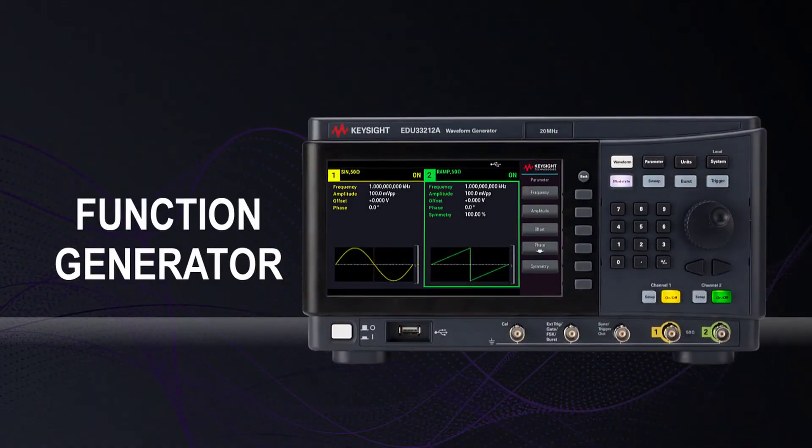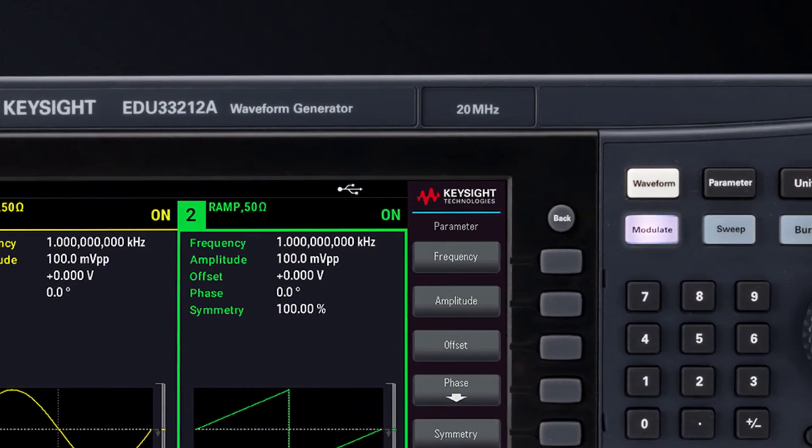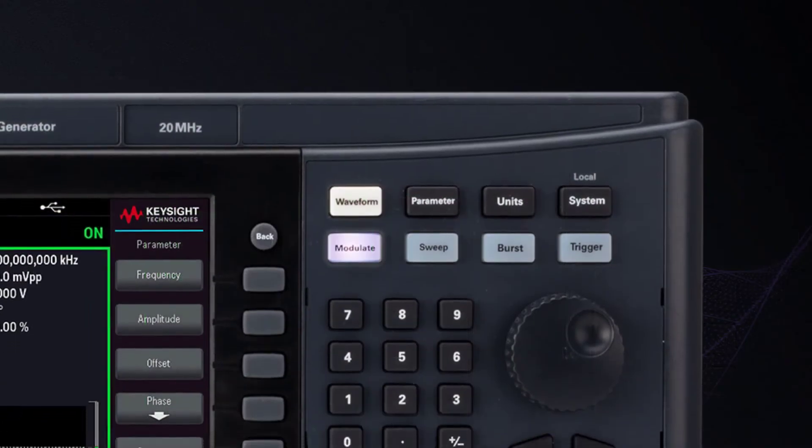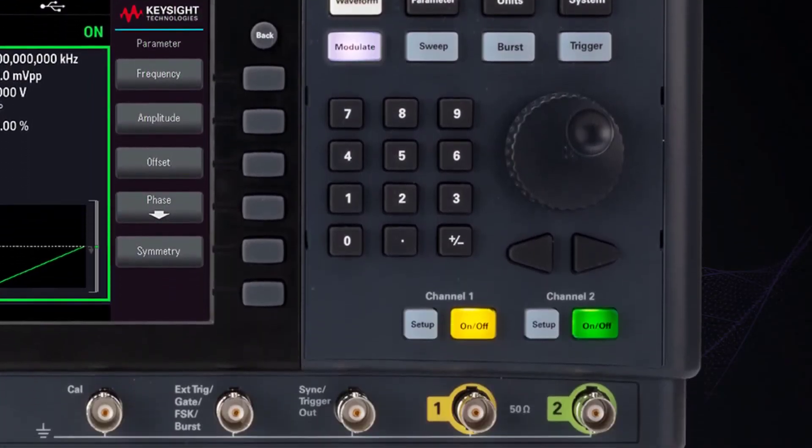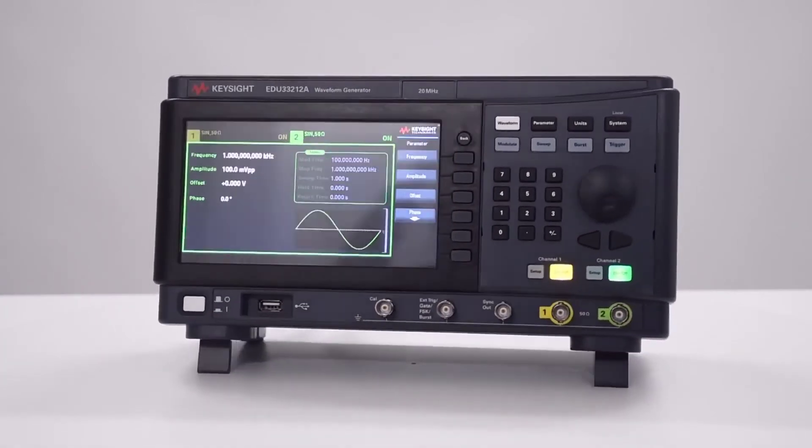The Function Generator offers all the standard signals and features you need today and expect for testing tomorrow's designs. It has 17 built-in arbitrary waveforms and 6 built-in modulations to get you set up and testing immediately.